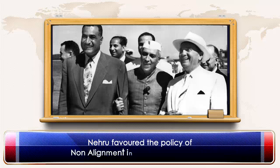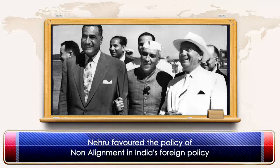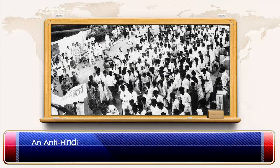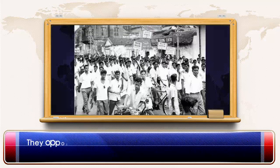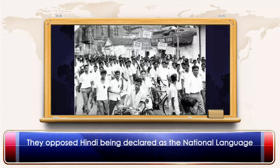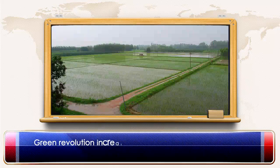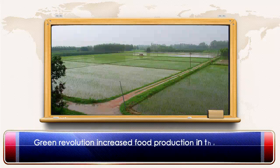Nehru favoured the policy of non-alignment in India's foreign policy. An anti-Hindi agitation was started by the DMK in Tamil Nadu, opposing Hindi being declared as the national language. The Green Revolution increased food production in the country.